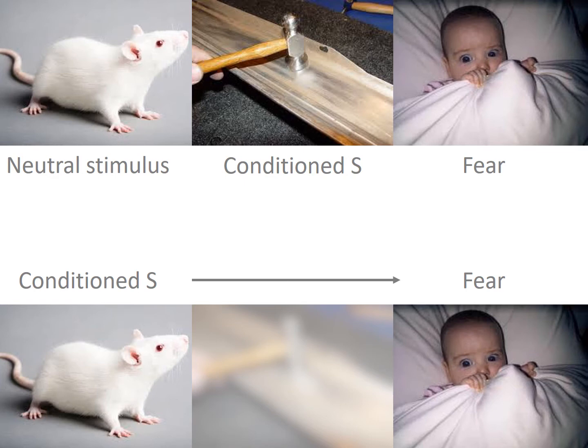But this white rat often preceded the loud noise and thus was conditioned to evoke fear. Hence, the white rat was eventually called the conditioned stimulus.